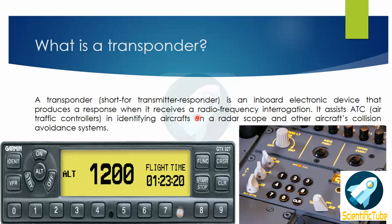So what is a transponder? A transponder, short form for transmitter and responder, is an inbound electronic device that produces a response when it receives a radio frequency interrogation. It assists ATC, or air traffic controllers, in identifying aircraft on a radar scope and other aircraft's collision avoidance systems.